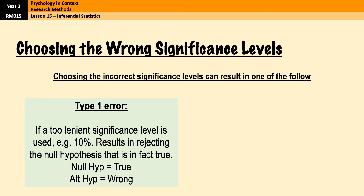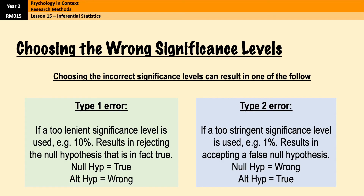It means your statistical test has told you that your results are significant when they're actually not. It can also swing the other way: if your significance levels are too stringent — going for 1% instead of 5% (0.01 instead of 0.05) — that can result in a type 2 error, which is a false negative. That results in accepting the null hypothesis when you should have accepted the alternate hypothesis — your statistical test is telling you your results are insignificant even though they actually are significant. This is important because type 1 and type 2 errors can come up in an exam.